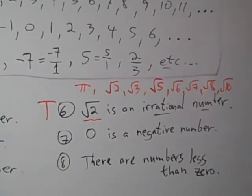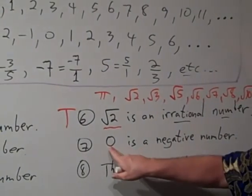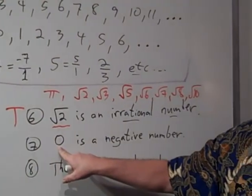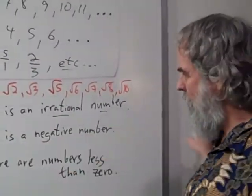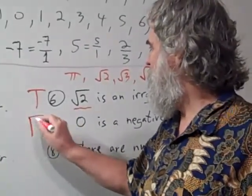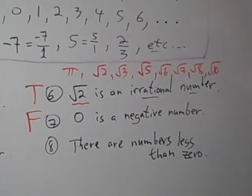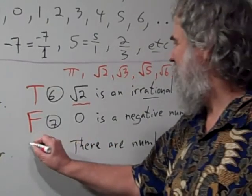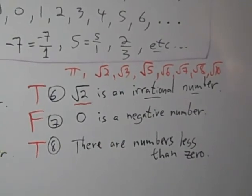In problem number 7, it says 0 is a negative number. No, it isn't. Zero is neither negative nor positive — it's a number that sits right on the line, dividing the positive numbers on its right and the negative numbers on its left. So this is false. Number 8 says there are numbers less than 0. Yes, all the negative numbers are less than 0, so this is true. So, there we have it.